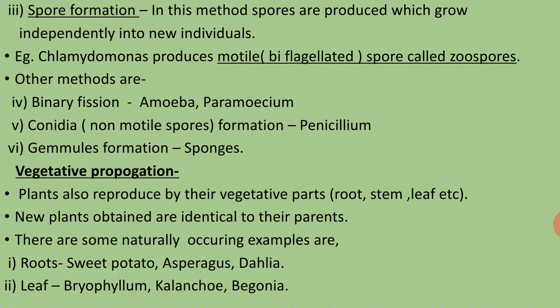The new plants obtained by vegetative propagation are identical to their parents — it is a uniparental, asexual method. There are some naturally occurring examples. For roots: sweet potato, asparagus, and dahlia are plants in which roots are used for vegetative propagation.